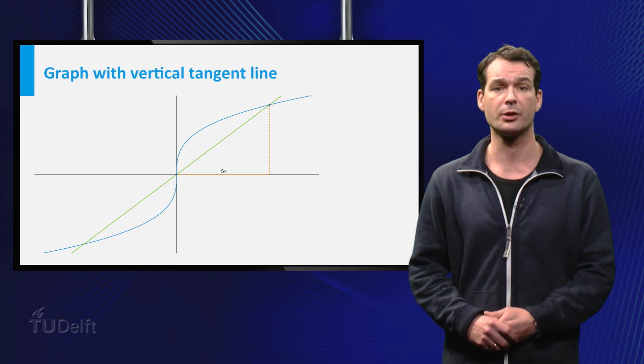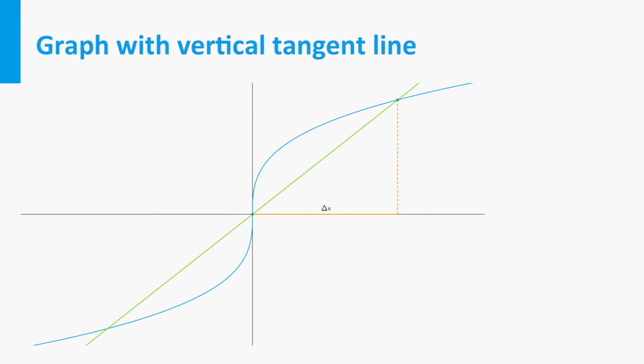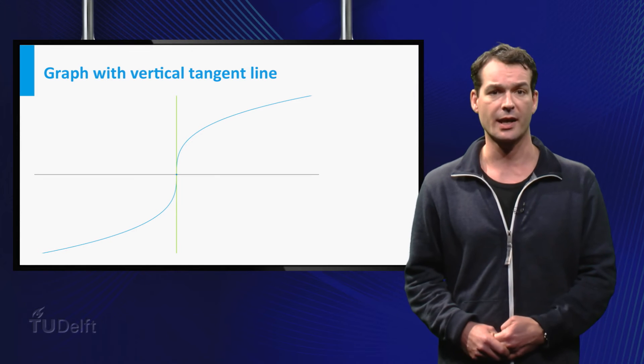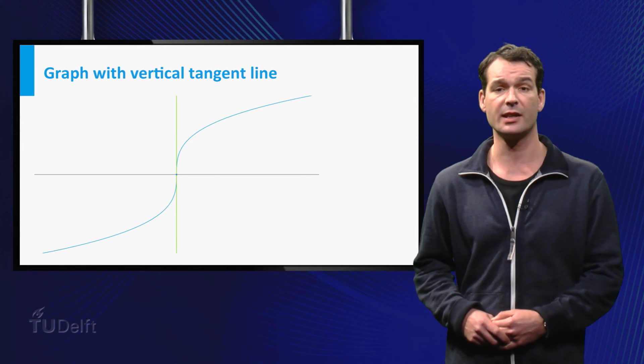The last function we look at is the cube root of x. We can do the same as before. Approximate the tangent line at zero by first taking delta x positive and then negative. But nothing seems to go wrong. The graph has a tangent line at x equals zero. The problem in this case is that the tangent line is vertical so the slope of the tangent line is infinite.